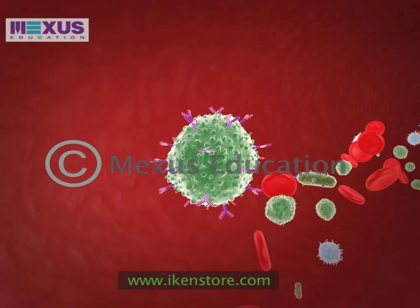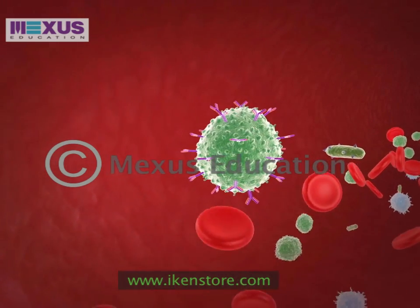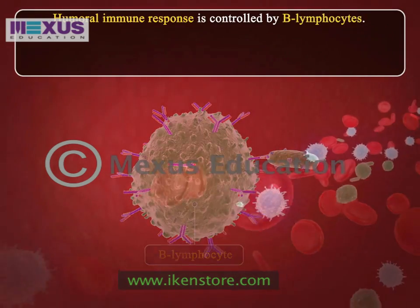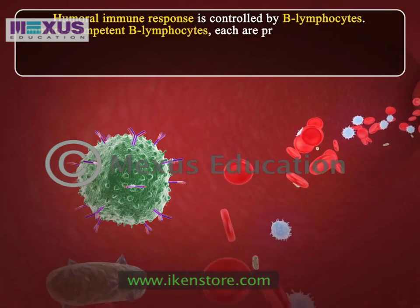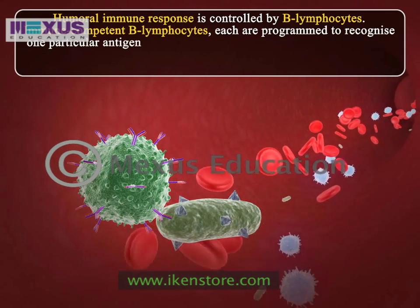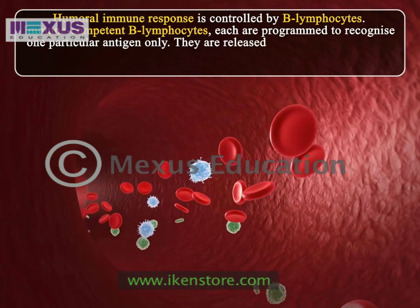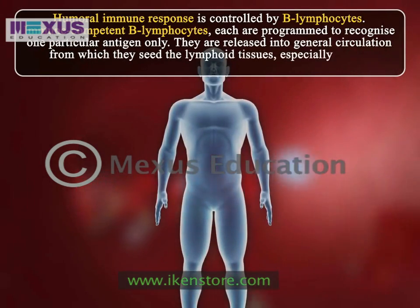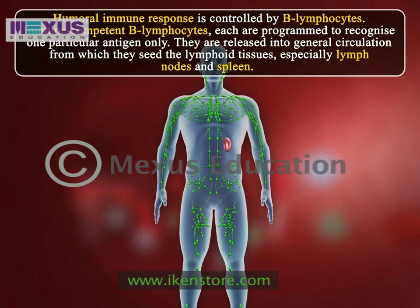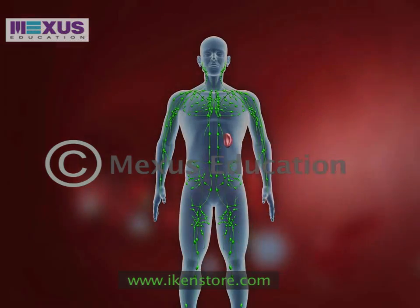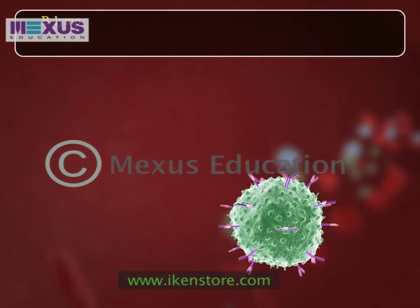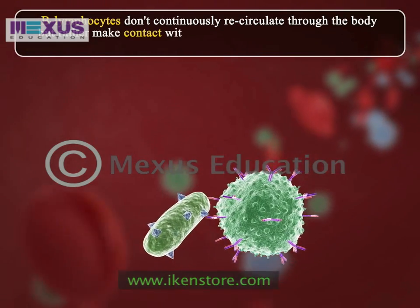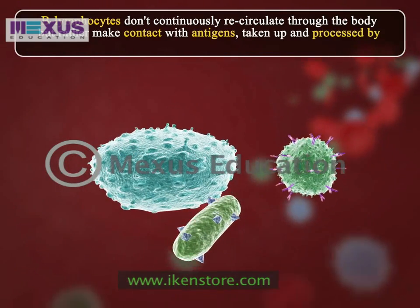Unlike the cellular immune response taken care of by T lymphocytes, the humoral immune response is controlled by B lymphocytes. Each immunocompetent B lymphocyte is programmed to recognize one particular antigen only. They are released into general circulation, from which they seed the lymphoid tissues, especially lymph nodes and spleen. B lymphocytes don't continuously recirculate but rather make contact with antigens taken up and processed by macrophages.